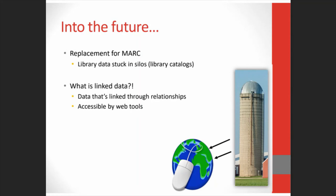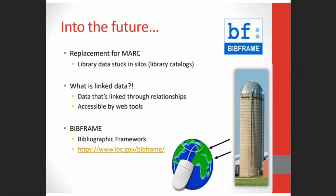When linked data is combined with next generation catalogs, the hope is that you'll be able to find an item at the library closest to you by searching Google. There have been some pilot projects for this, such as LC's BibFrame — the Bibliographic Framework — which hopes to replace MARC with a linked data model to make library data more useful inside and outside of the library community. But these are still works in progress with no set timelines for implementation.